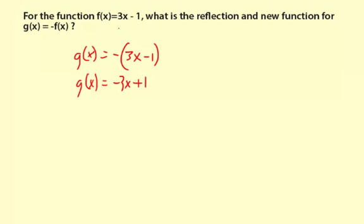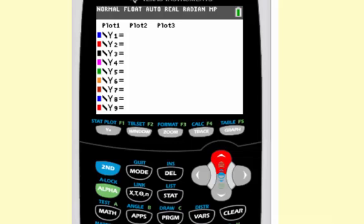What I'm going to do is I'm going to graph both f of x and g of x and compare. So f of x is 3x minus 1, and g of x is the negative of 3x minus 1. And I use parentheses to make sure the entire 3x minus 1 is turned negative. Then let's graph.